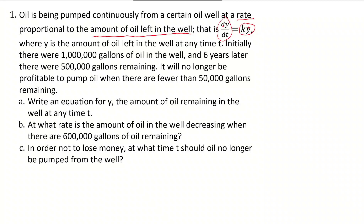We are told that initially there were 1 million gallons of oil in the well. Six years later, 500,000 gallons remaining. These sound like an initial condition and some other condition that will help us solve for constants. It also says that it will no longer be profitable to pump oil when there are fewer than 50,000 gallons remaining. So very likely we'll be asked to figure out when it will not be profitable to pump oil from this well.